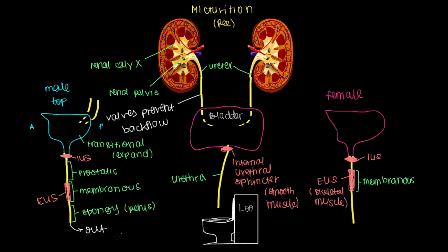This entire system is in contact with the external environment. Women don't have a spongy urethra, so after the membranous urethra the connection to the outside world is relatively short compared to the male urethra. This relates back to the comment about backflow — valves in the ureter ensure urine flows in one direction toward the bladder, but without valves and with backflow, we can end up with stasis, where urine just hangs around up in the ureter or even in the kidney for a long period of time.